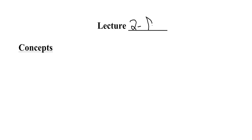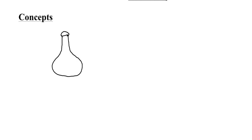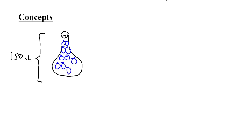Lecture two is called dilutions. Whereas in lecture one we were preparing solutions of a given molarity, now we're going to be diluting solutions of a given molarity. These circles represent solute particles. The volume of this flask is 150 milliliters and it contains ten solute particles, so let's say the molarity is 10 molar — where M stands for moles dissolved in liters. This will be our initial concentration.